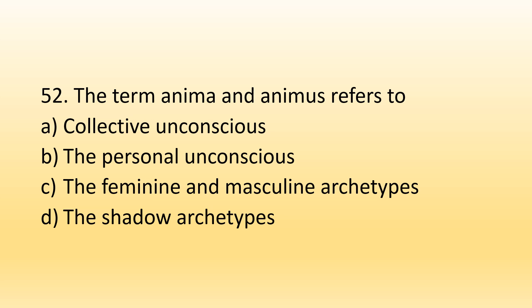Number 52. The terms anima and animus refer to: Option A, Collective Unconscious; Option B, Personal Unconscious; Option C, Feminine and Masculine Archetypes; Option D, Shadow Archetypes. The right option is Option C, Feminine and Masculine Archetypes. Anima stands for feminine characteristics — for example, being emotional. Animus relates to masculine characteristics such as muscular strength or strong personality. According to Carl Jung, both aspects should be present in males and females because they balance the overall personality.